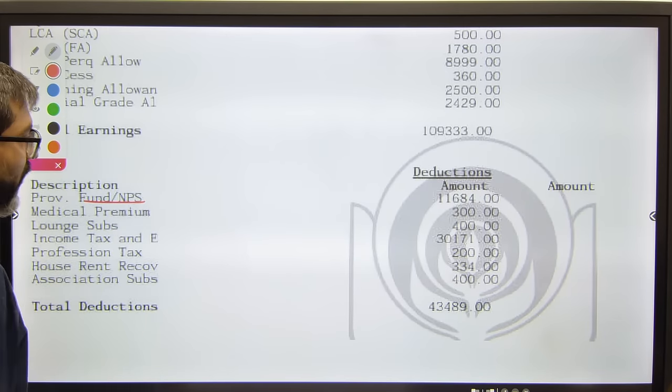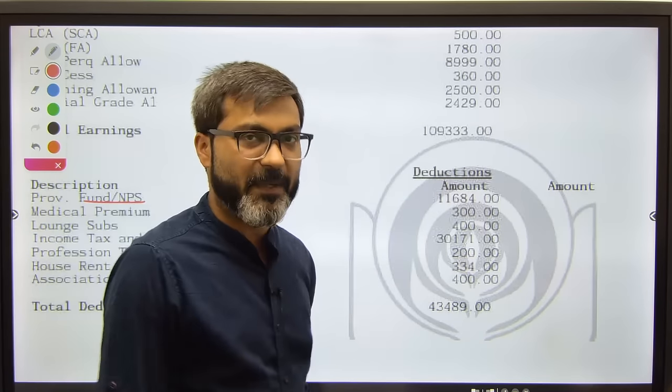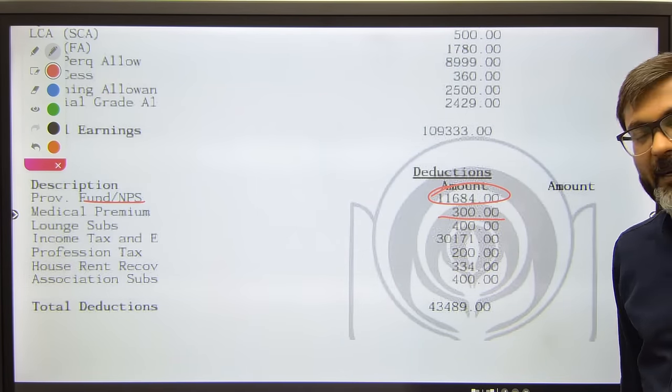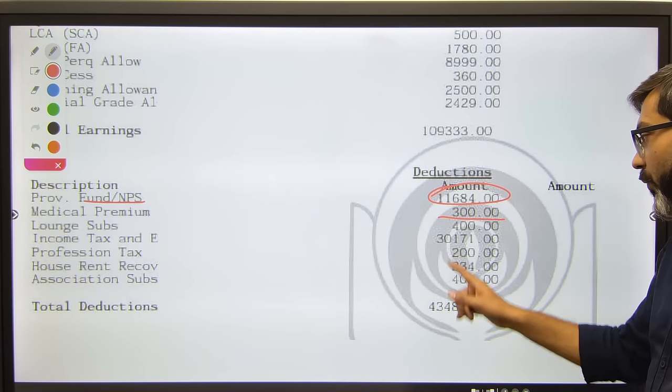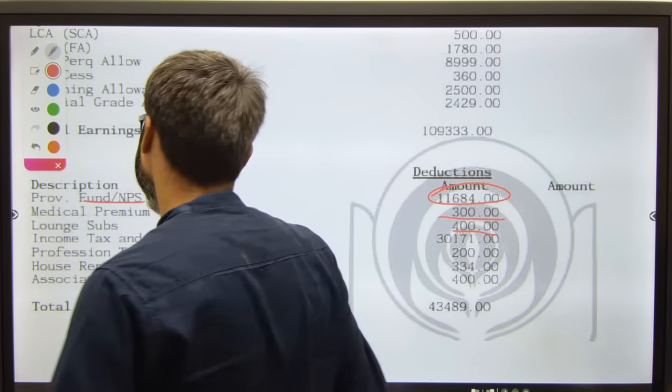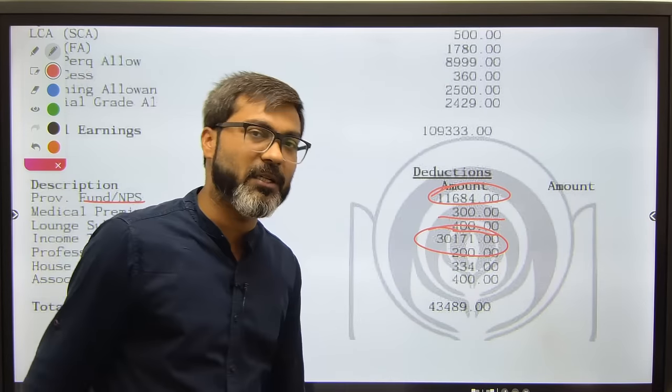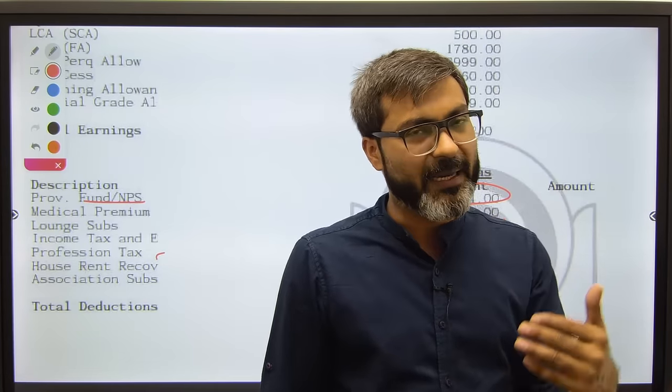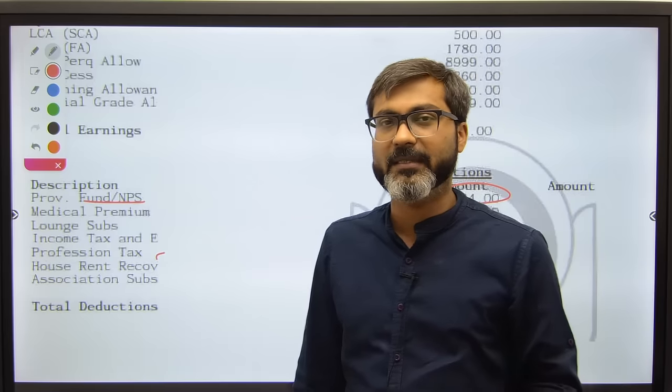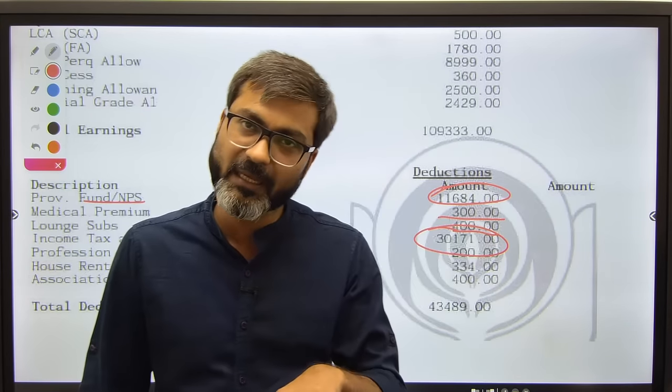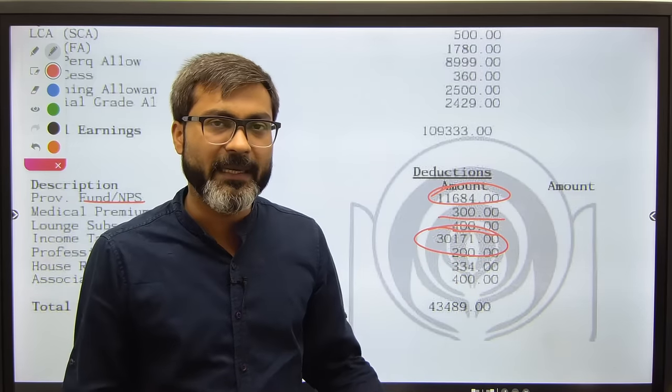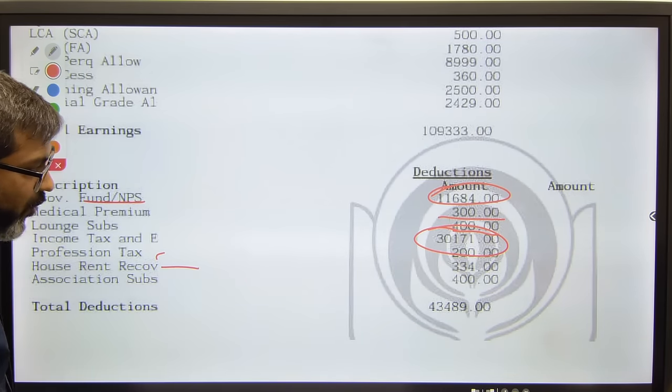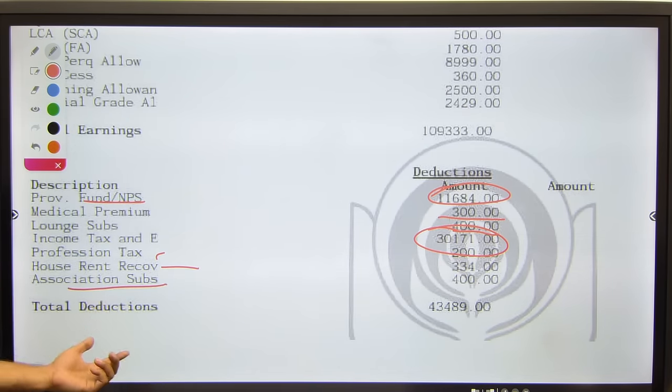Now let's talk about deductions. Provident fund will be deducted, of course, and NPS which you'll get back when you retire - around eleven thousand six hundred and eighty-four. Medical premium is three hundred rupees for you and your dependents. Loan subscription if you take is four hundred rupees. Income tax and professional tax in this case is thirty thousand, but of course it's not monthly thirty thousand. If you have a salary of around one lakh ten thousand, the monthly income tax will be around ten to twelve, thirteen thousand as per the new tax regime. All government offices are working on the new tax regime right now.